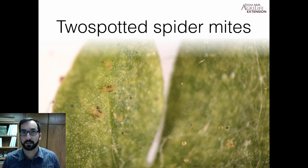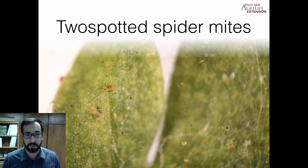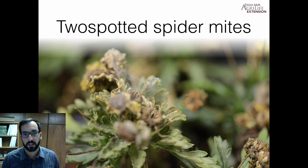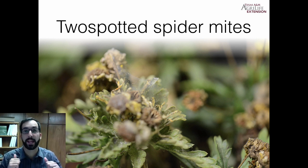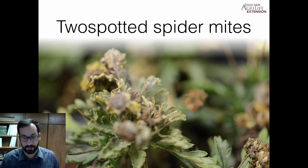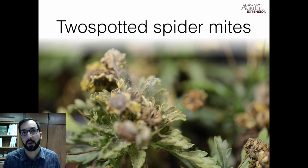Next, we go on to the two-spotted spider mites. They are also very hard to see with the naked eye, and as the name implies, they have two spots. You can see the eggs of the two-spotted spider mites here. If you get a very high population — at that point it's considered too late for management. Your best bet is to toss those plants, as they are a potential source of spider mite populations for your other healthy plants. There is no amount of insecticide that can penetrate that webbing to reach the spider mites.